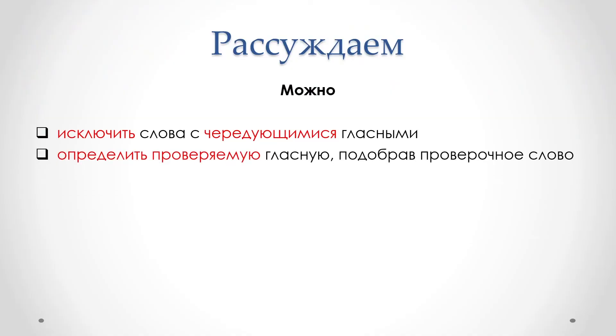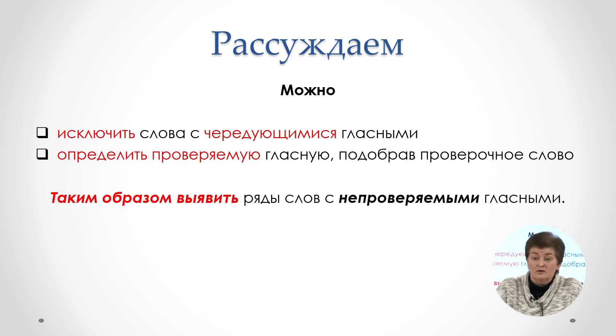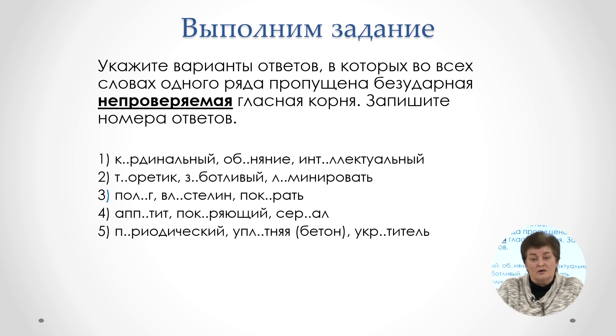Казалось бы, последняя группа — непроверяемая гласная — одна из самых простых. Возможно, да, если это не экзамен. Во время систематической подготовки можно пользоваться словарём — это нужно делать, это поможет запомнить правильное написание слов. Но на экзамене словаря нет. Тогда можно действовать методом исключения: зная чередующиеся корни, исключаем их из предложенных слов, подбираем проверочные слова — и находим ряды с непроверяемой гласной в корне.